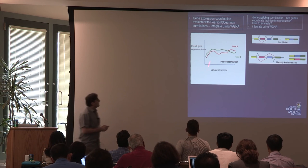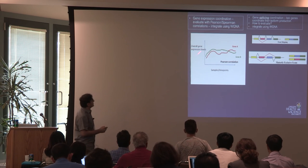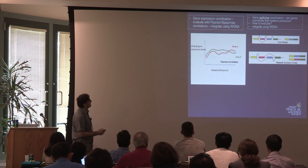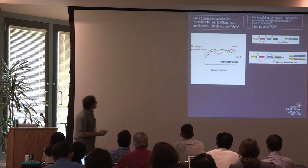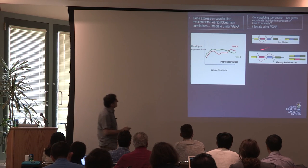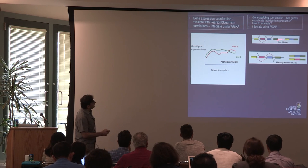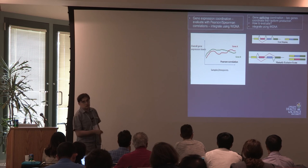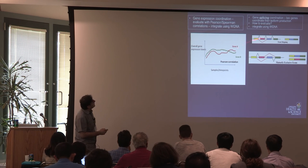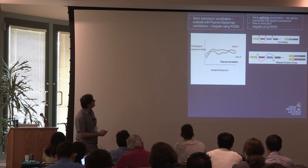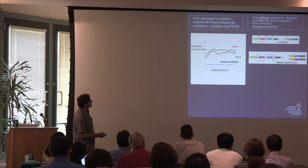By now you're all familiar with gene expression levels and how they are coordinated across different genes. Now for gene splicing, the goal is to say: these two genes start producing isoforms in a coordinated manner — how do we evaluate this coordination? The goal is to integrate this using WGCNA.